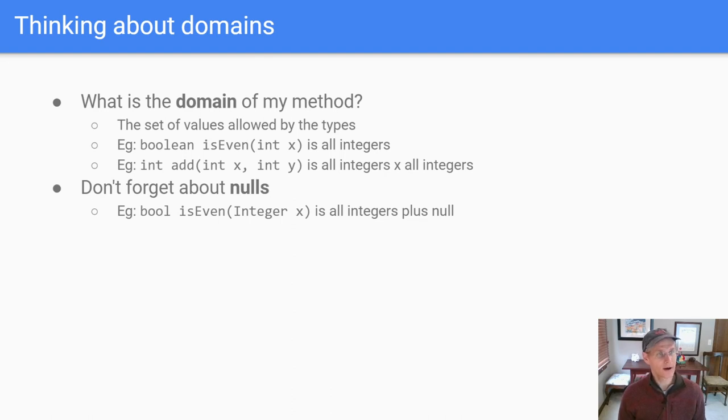So let's talk about thinking about domains. If you've got a method, you should be asking yourself, what is the domain of this method? That is, what are the set of values that are allowed in by the types that appear in the signature? So if you have a signature like this one, boolean isEven that takes in an integer x, the domain is all integers and that comes from the int x parameter. If you had another method, which was returning an integer and it was an add method, it took in an integer x and an integer y, the domain is all integers cross all integers. And that's because you have two integers coming in as the domain.